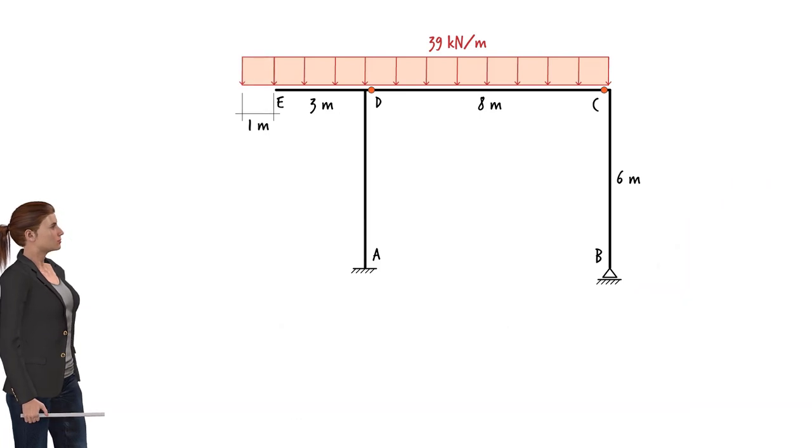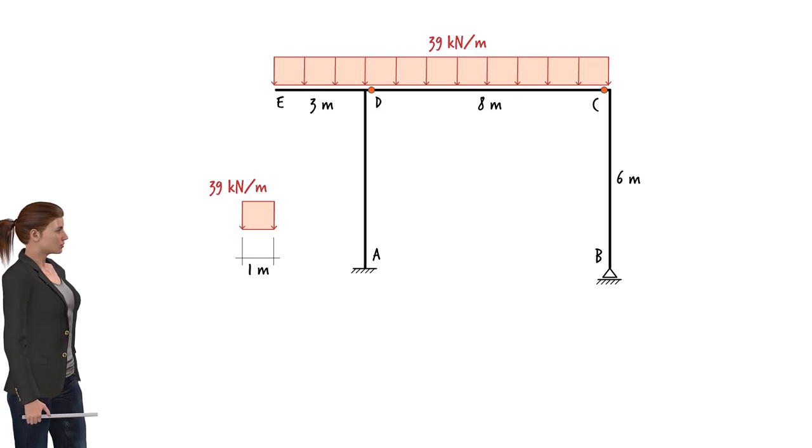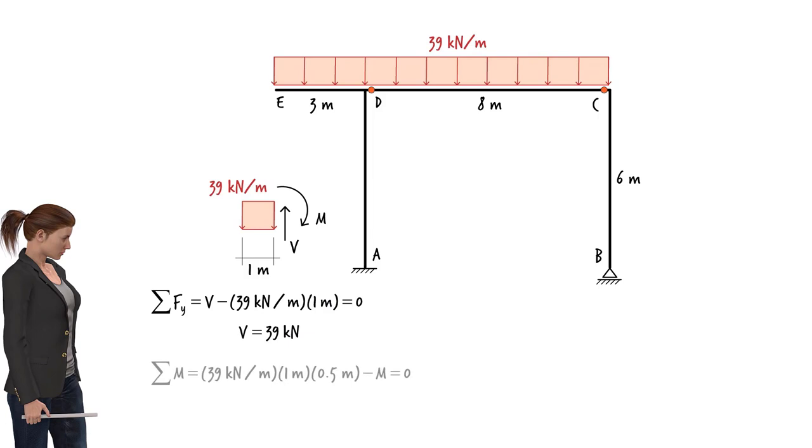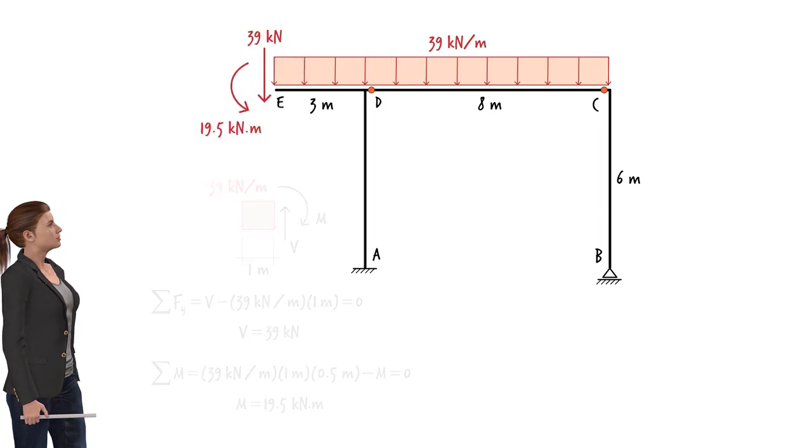Before we proceed with the analysis, however, let's replace the segment of the distributed load to the left of joint E with a concentrated load and a concentrated moment at E. To do so, we can cut the distributed load just to the left of E and treat the isolated segment as a free body diagram. For the segment to remain in the state of equilibrium, there must be a shear force and a bending moment at the cut point. V and M can be determined by writing and solving the static equilibrium equations. The sum of the forces in the Y direction must be zero. Therefore, V equals 39 kN. The sum of the moments about the cut point must be zero. Therefore, M equals 19.5 kNm. These forces are also present, but in the opposite directions, at the other end of the cut. This means that the effect of the 1m wide distributed load on E is a downward force of 39 kN and a counterclockwise moment of 19.5 kNm.